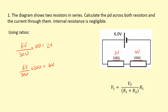This equation is basically just what I did. It says take the total voltage, divide by the total resistance, and multiply by the resistance of the particular resistor to get the voltage across that resistor. So if I wanted to find the second resistor, I can use this to get the voltage across it.